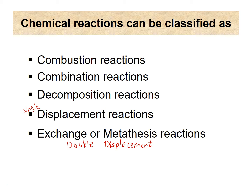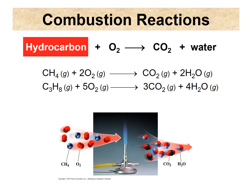Let's go through these reaction types, starting with combustion. What do you need when you burn something? You need oxygen. So in a combustion reaction, one of the reactants is oxygen and the other is a hydrocarbon — made up of hydrogens and carbon. Hydrocarbons can also contain other elements, but they must have mostly hydrogen and carbon. When you combust a hydrocarbon, you always get CO₂ and water as products, regardless of which hydrocarbon it is. For example, burning methane in the lab produces CO₂ and water, and then we balance accordingly.